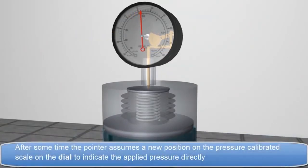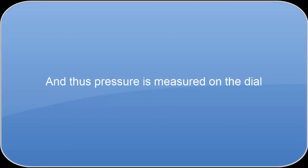After some time, the pointer assumes a new position on the pressure calibrated scale on the dial to indicate the applied pressure directly. And thus, pressure is measured on the dial.